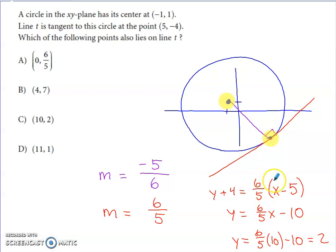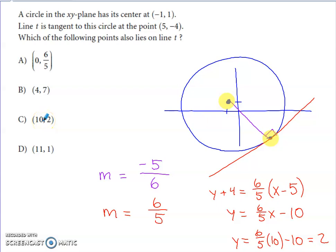Distributing the slope and subtracting 4 gives the slope-intercept form: y = (6/5)x − 10. Now it's guess and check among the answer options. Because the slope has a denominator of 5, I expect option C — x = 10 — to work nicely: 10 × (6/5) = 12, and 12 − 10 = 2. So the point (10, 2) lies on the tangent line, and C is the answer.